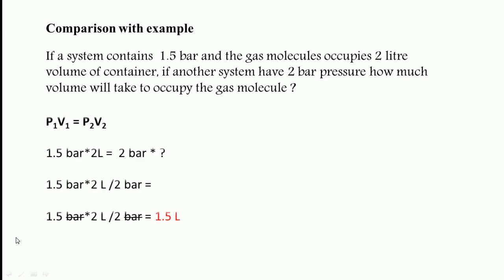Remember, P1V1 equals P2V2. System one has pressure 1.5 bar and volume 2 liters. System two has 2 bar pressure, and we need to find the volume. Mathematically, we get 1.5 liters. Thank you, please watch my videos and subscribe.